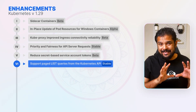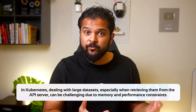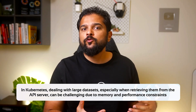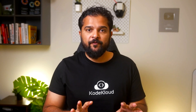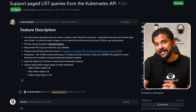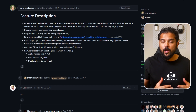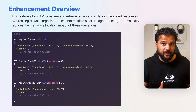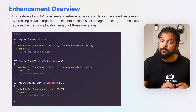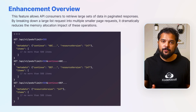The next enhancement is supporting paged list queries from the Kubernetes API. In Kubernetes, dealing with large datasets retrieved from the API server can be challenging due to memory and performance constraints. The traditional approach of fetching entire resource lists in one go could significantly strain system resources. Now stable in Kubernetes 1.29, this feature allows API consumers to retrieve large sets of data in paginated responses. By breaking down a large list request into multiple smaller page requests, it dramatically reduces the memory allocation impact of these operations, making handling extensive datasets more efficient and reliable.